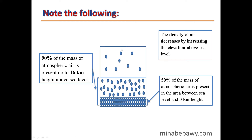The atmospheric envelope extends about 1,000 km from sea level. Notably, 50% of the mass of atmospheric air is present in the area between sea level and 3 km height only. This means the remaining 997 km contains only 50% of the mass of the atmospheric air.